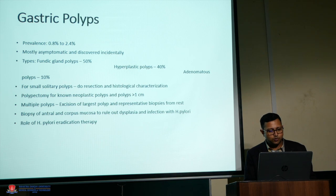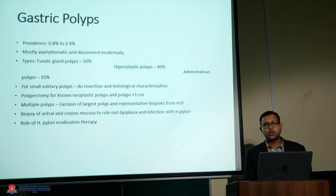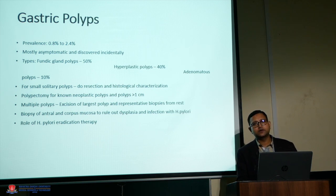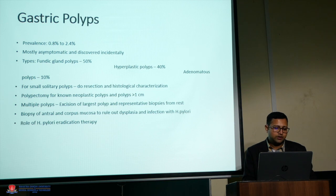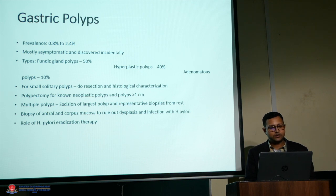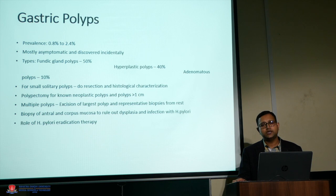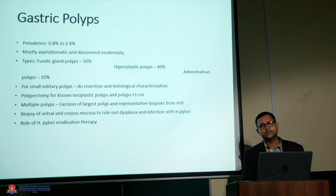For very small polyps in the stomach, we should do resection and send them for histology. If polyps are larger than one centimeter, they should undergo polypectomy. After excision, if there are multiple polyps, we should try to excise as many as possible, keeping in mind the risk of bleeding and perforation, and send biopsies. In addition to biopsy of the polyps, it is important to also biopsy the antral and corpus mucosa because coexistence of dysplasia and H. pylori infection can occur.